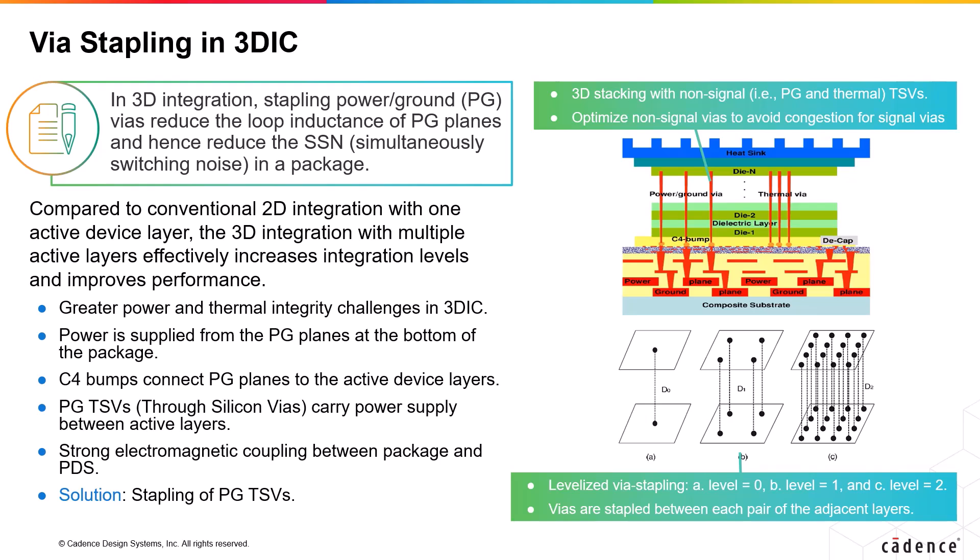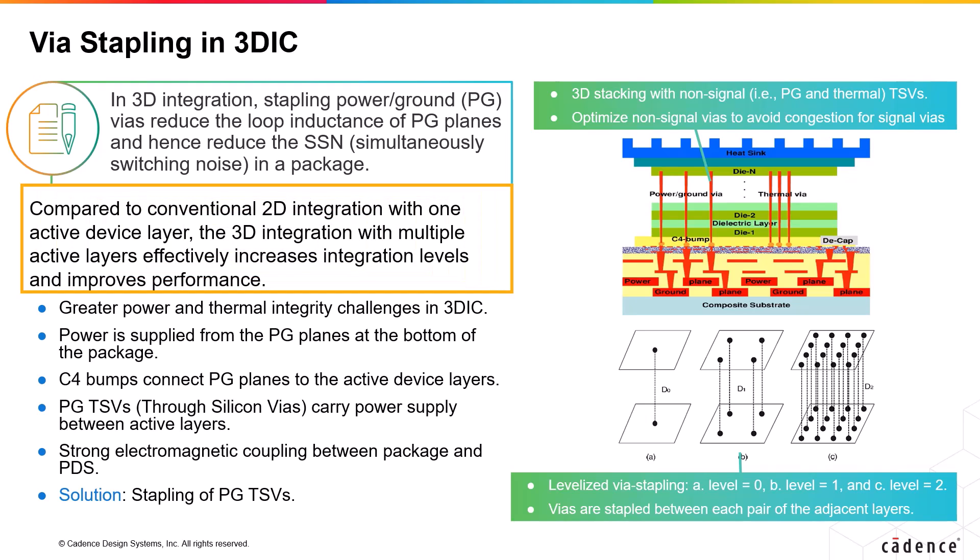VIA stapling in 3D integrated circuits optimizes power and thermal integrity separately, and uses steady state thermal analysis. Compared to conventional two-dimensional integration with one active device layer, three-dimensional integration with multiple active layers is effective to increase integration level and improve performance. However, 3D integration also creates challenges such as power and thermal integrity that are more difficult to deal with than those in 2D integration.